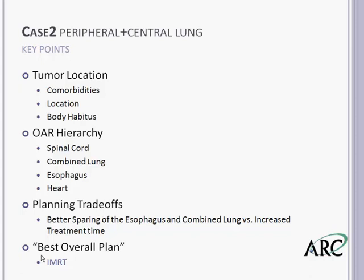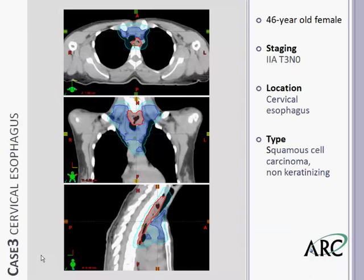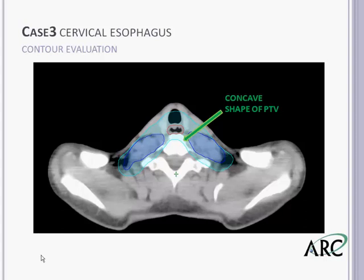Case number 3 was a 46-year-old female who presented with dysphagia for one year. An upper endoscopy revealed an abnormal area of esophagus, and biopsy was positive for squamous cell carcinoma, non-keratinizing. A PET-CT revealed prominent abnormal hypermetabolic uptake consistent with a 4-centimeter length of abnormality in the proximal esophagus. This is a good instance where tumor location and shape greatly impacted our planning. The CTV was very close to the spinal cord — in some areas less than 1.5 centimeters — and the concavity of the PTV made it so that some planning techniques couldn't satisfy our cord constraints.